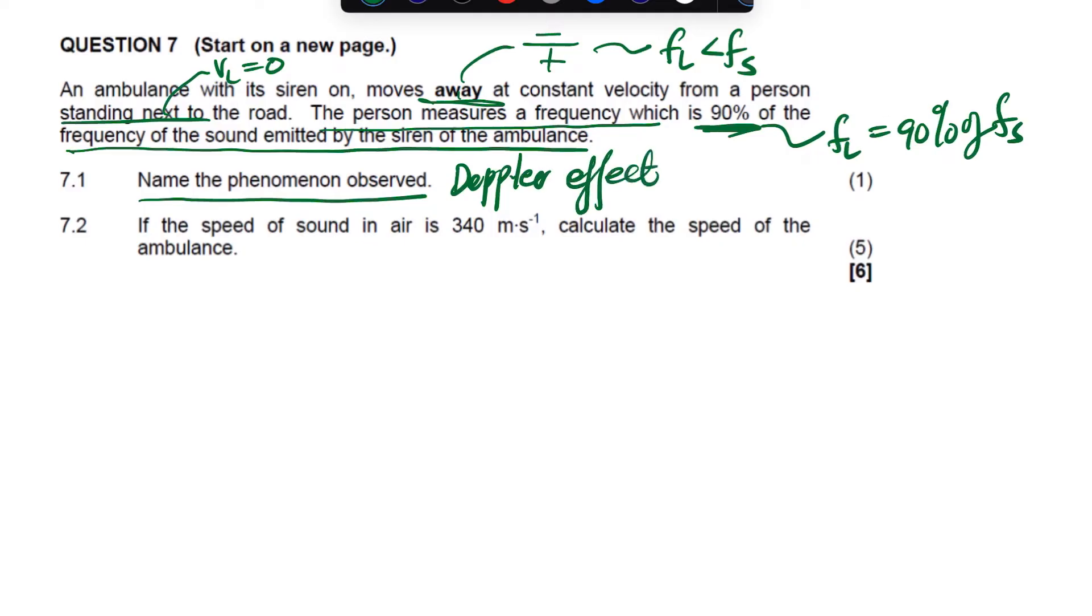It says here, if the speed of the sound in the air is 340, this is V, we calculate the speed of an ambulance. So, we want the velocity of the speed or the velocity of an ambulance. So, we'll use the formula that FL is equal to V minus VL, divide by plus VS, multiply by FS.